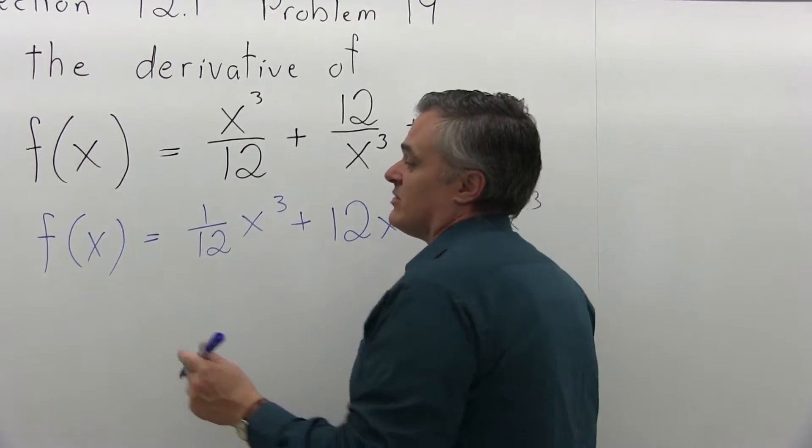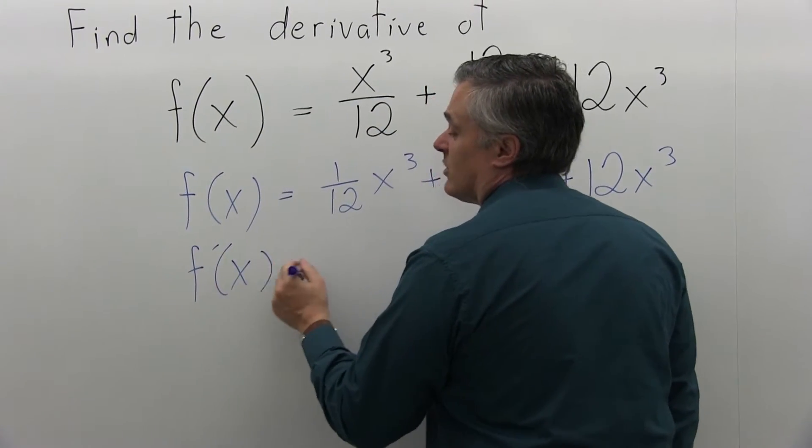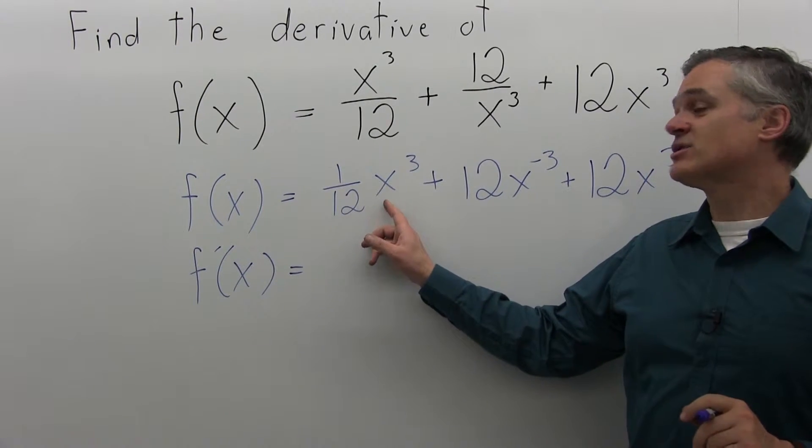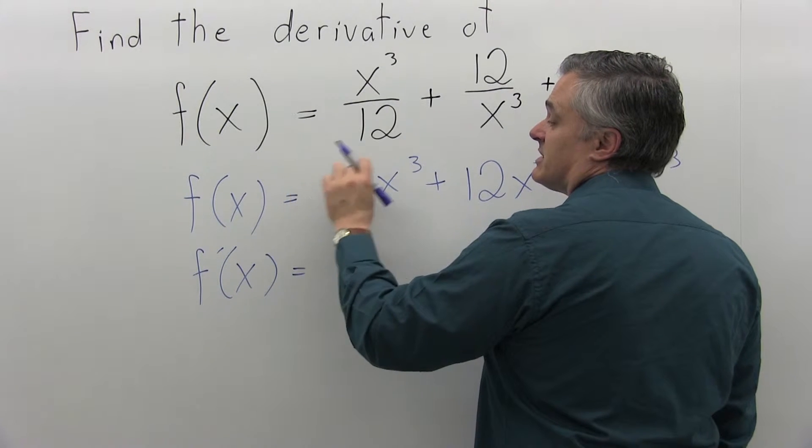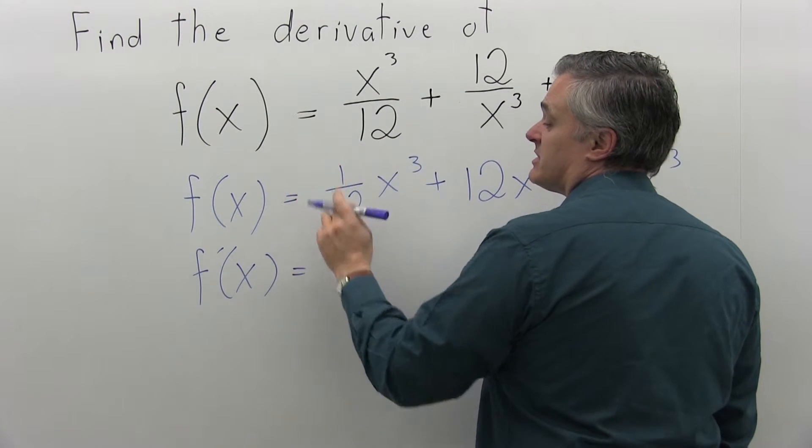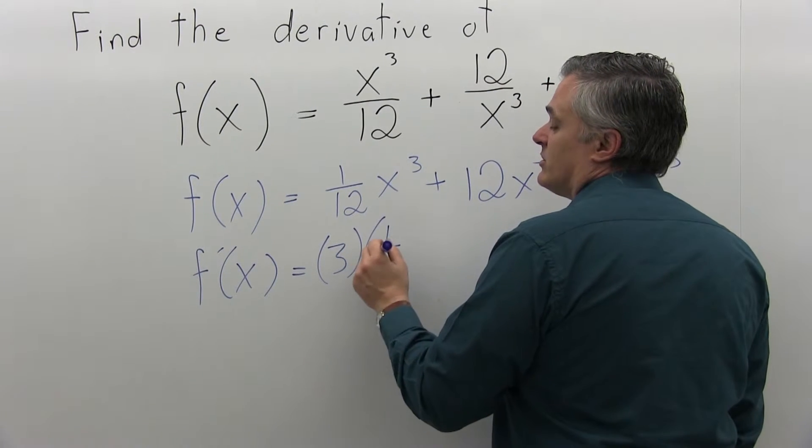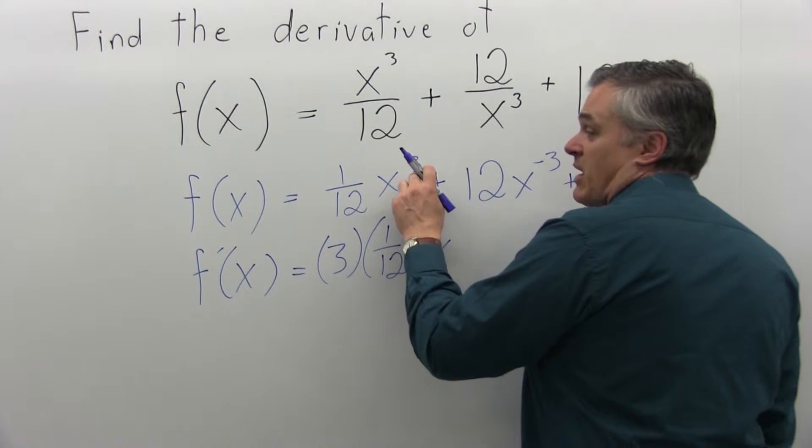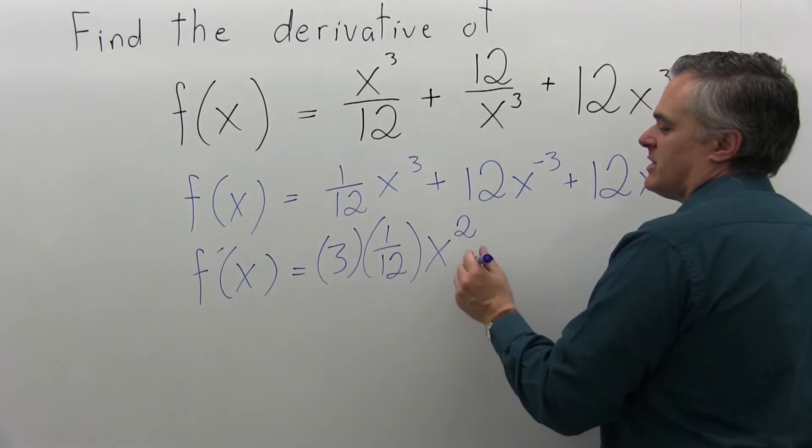So now I'm going to do f'(x), the derivative. f'(x) equals—well, the first piece I have to deal with is (1/12)x³. The exponent is going to come down times the number in front. The exponent is three times the number in front is 1/12. 3 times 1/12, x to the one less power. So third power, you go one less power is second power. And I'll simplify that a little bit.